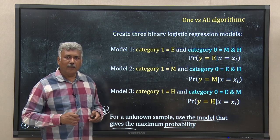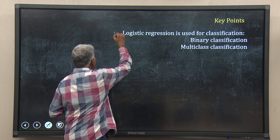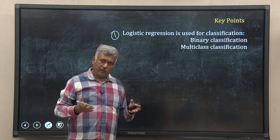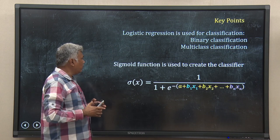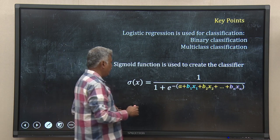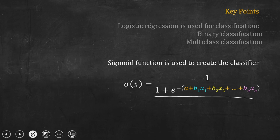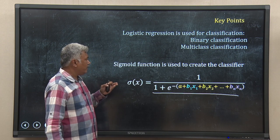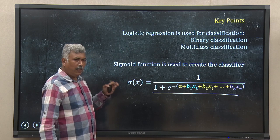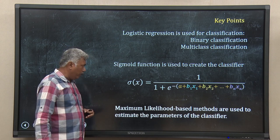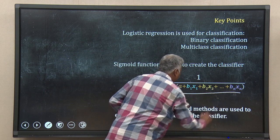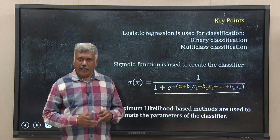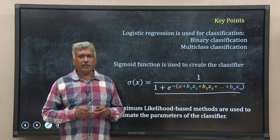Let me summarize what we have learned in this lecture. Logistic regression is used for classification — both binary and multi-class. We use a logistic sigmoid function: 1 / (1 + e^(−(a + b1·x1 + b2·x2 + ... + bn·xn))). We use a maximum likelihood based approach to calculate the parameters a, b1, b2, ..., bn of the classifier model. That is all for this lecture. See you in the next lecture. Till then, happy learning.